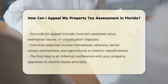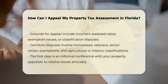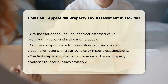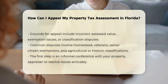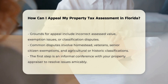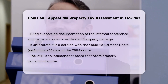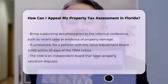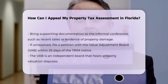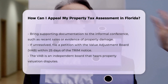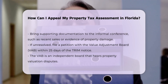If the informal conference does not resolve the issue, you must file a petition with the Value Adjustment Board within 25 days of receiving your Truth in Millage notice. The VAB is an independent board of local government officials who hear and decide property valuation disputes. You can find the necessary forms and electronic applications on your county's website.